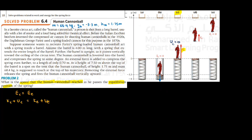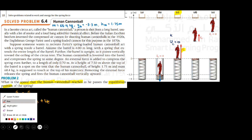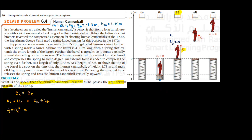We do have kinetic energy at C because the human cannonball is moving and has velocity, so kinetic energy equals half m·vC². At point E, since velocity is zero, kinetic energy at E is zero. But the human cannonball is raised to height h above the reference point, so there is potential energy, which we write as mgh. H is the same as calculated previously: 5.75 meters.